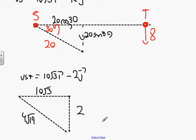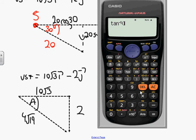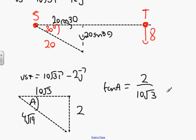This means it's going 4 root 19 relative to each other. Now we have to find the direction, so tan A is 2 divided by 10 root 3. Tan inverse of 2 divided by 10 root 3 gives us an angle of 6.59 degrees. That's expected - a really narrow angle because it's gone about 17 across to 2, so it's a really sharp angle.